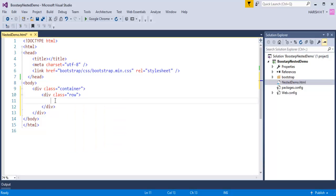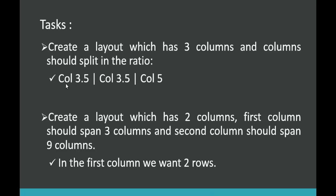Now it is my job to create 3 columns in this layout. The criteria is the columns should be split in this ratio: 3.5 and 3.5. When we add these two we will get the sum of 7. So 7 plus 5 equals 12 - totally when we add it the sum is 12, occupying the complete Bootstrap grid system of 12 columns.